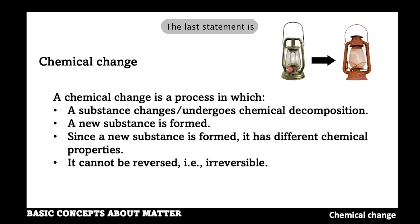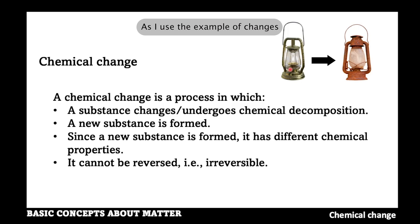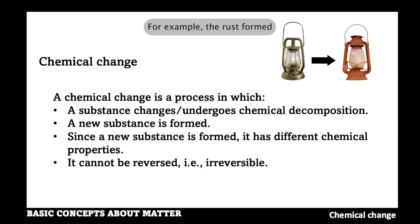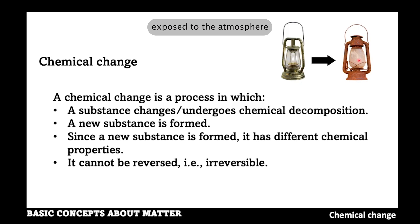The last point is that a chemical change cannot be reversed — it is irreversible. Unlike the ice-to-water-to-steam example, a chemical change cannot be reversed. For example, the rust formed when the lantern is exposed to the atmosphere cannot be reversed to form the original starting material.